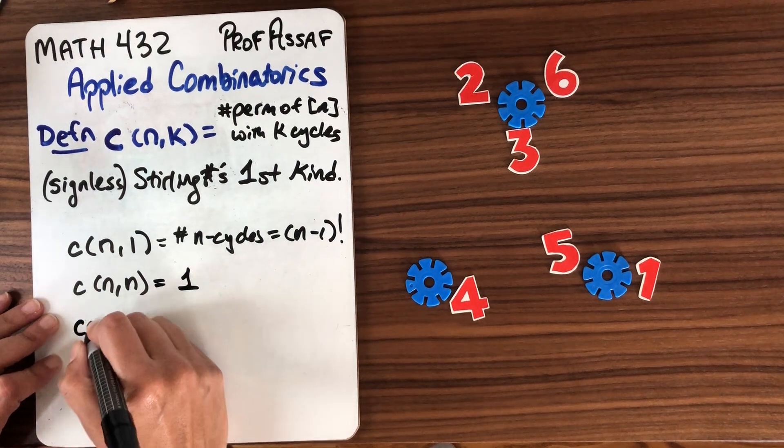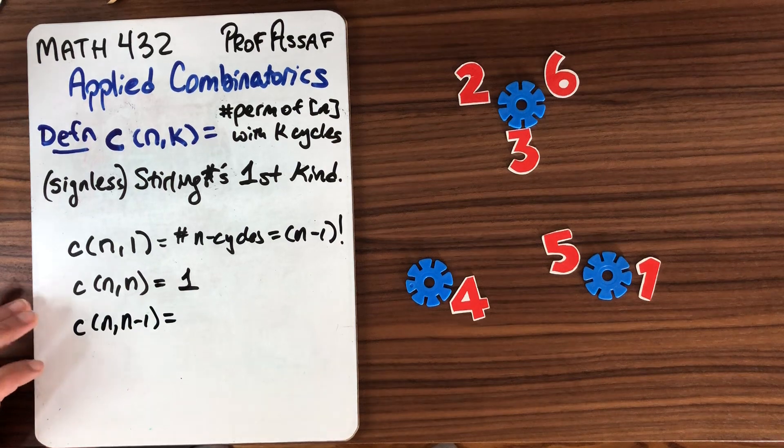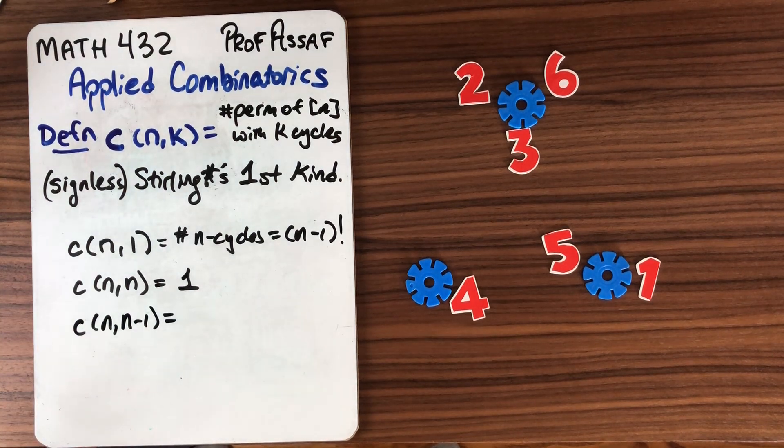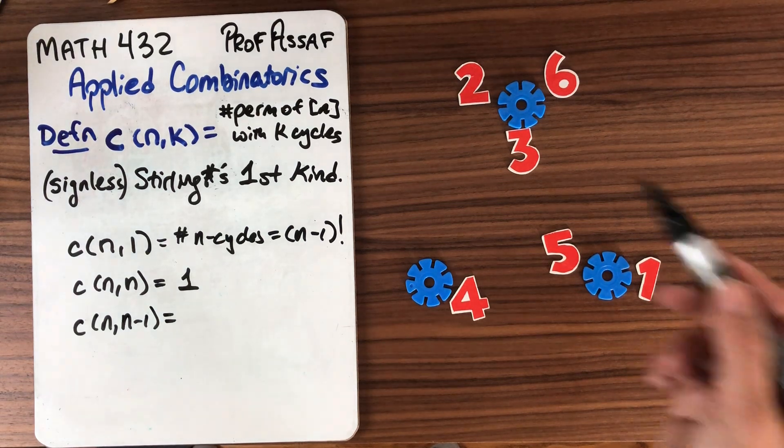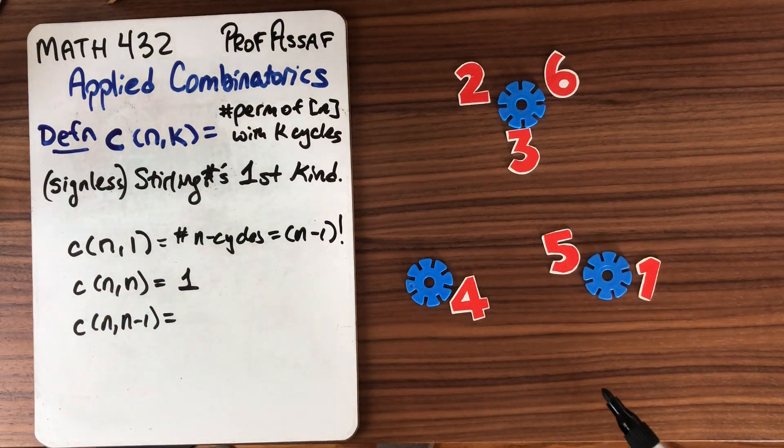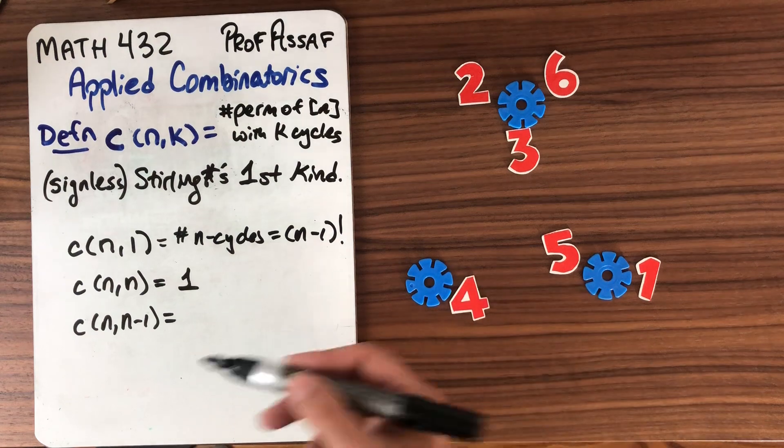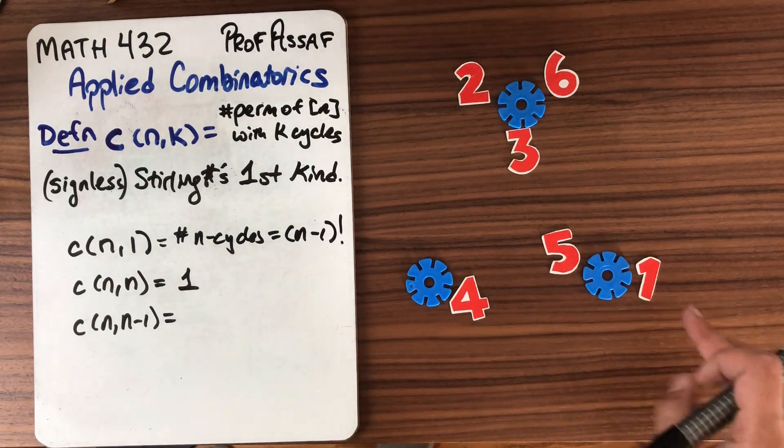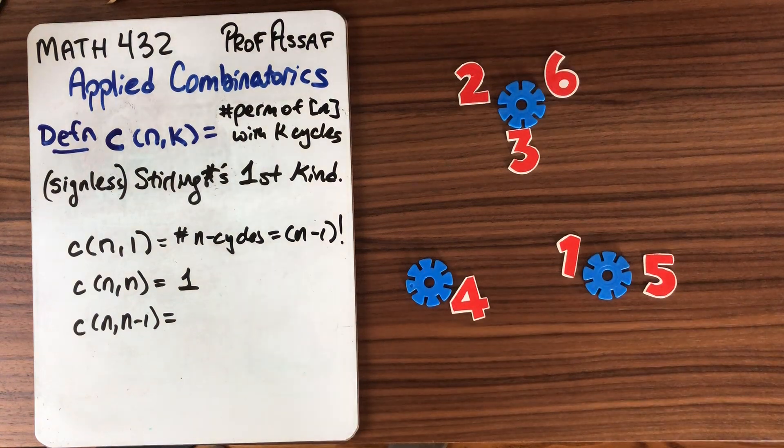What about c(n,n-1)? If we think about that one for a second, we have n-1 cycles, so the pigeonhole principle applies. We have more numbers than tables. So some table gets at least two numbers and in fact exactly one table gets exactly two numbers and when you have just two numbers it doesn't matter which order you put them in.